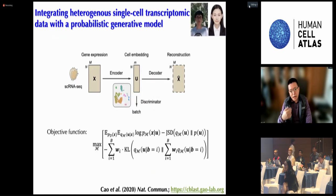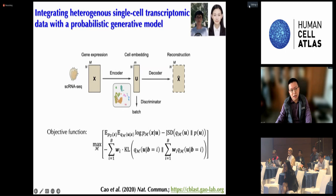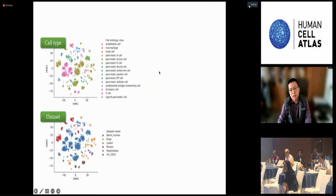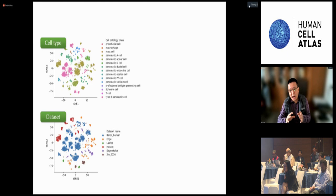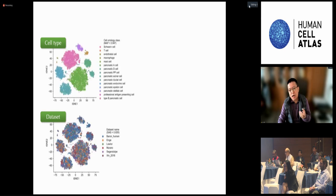We begin from single-cell RNA-seq from the transcriptome. We model the observed single-cell expression data X as being generated from a lower-dimensional latent space U by a particular transformation represented by encoder and decoder neural networks.